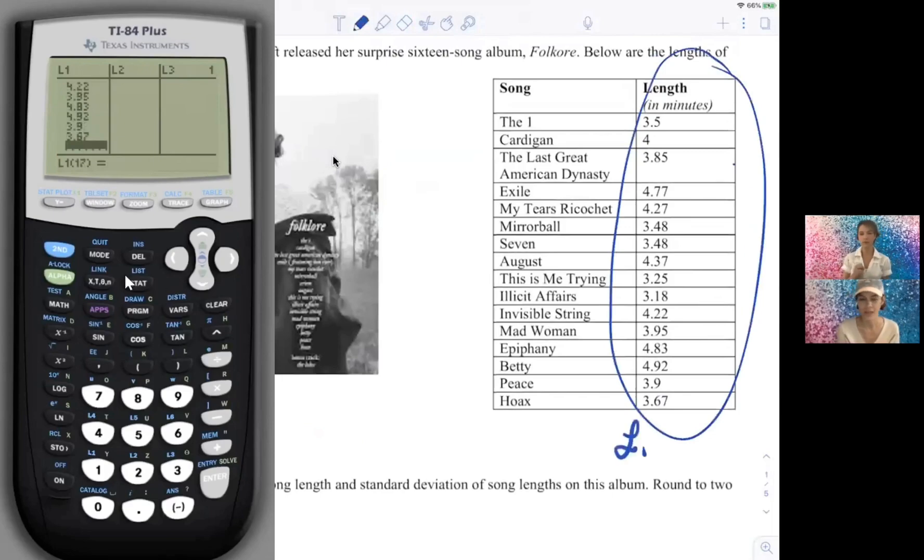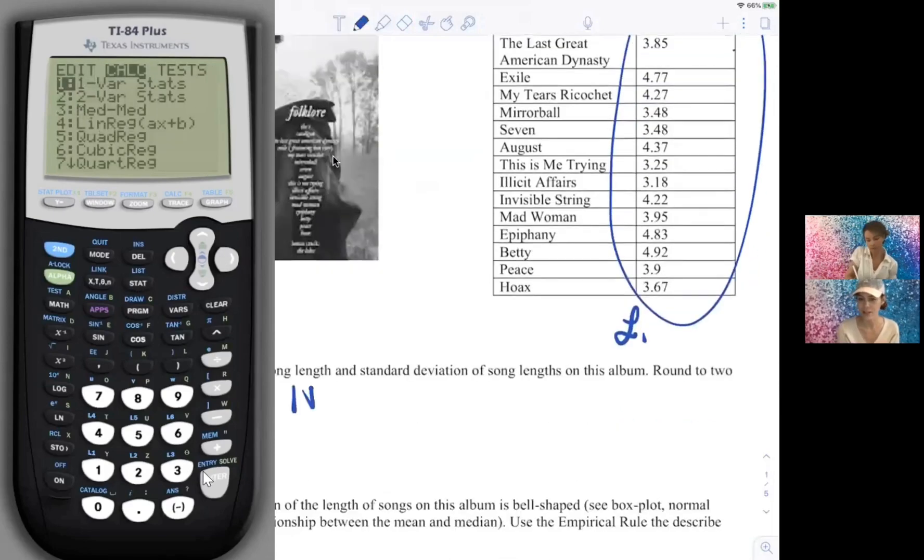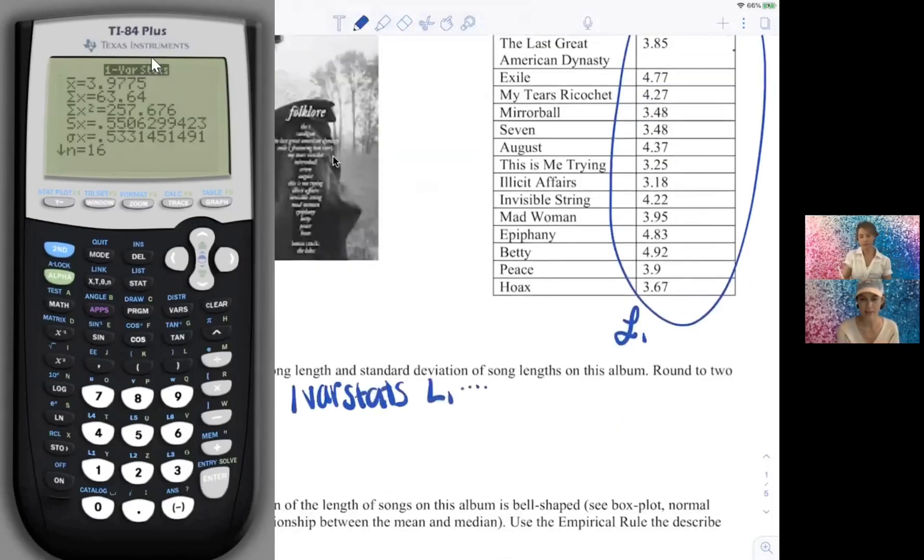And then we'll go to one of our stats to go ahead and find the mean, and it looks like the mean is going to come out to about 3.98 minutes. Okay, and then while we're at it, let's do standard deviation, which should come out to about 0.53 minutes.